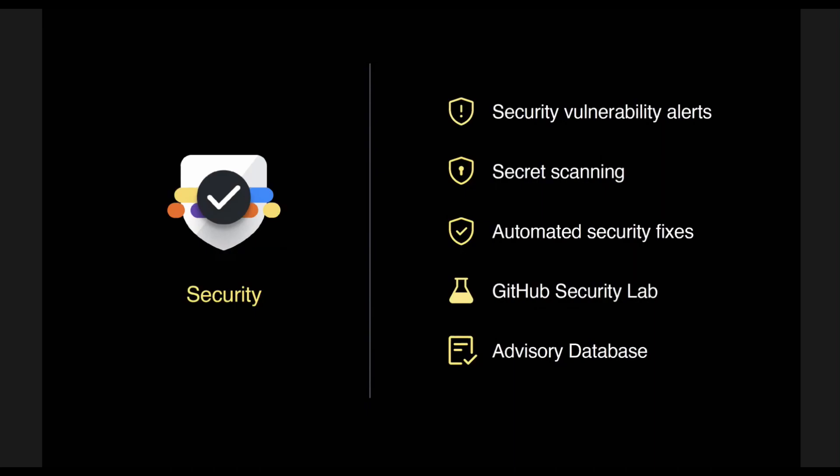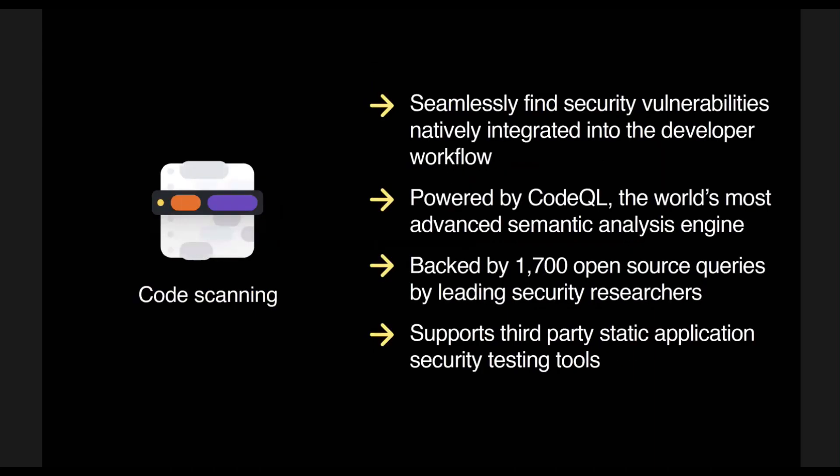So we're securing your dependencies and your secrets — but what about your code? That is where code scanning comes in. It seamlessly finds exploitable vulnerabilities natively integrated into the developer workflow. It is powered by CodeQL, the world's most advanced semantic analysis engine, which comes from our Semmle acquisition. CodeQL is backed by 1,700 open source queries by leading security researchers. You get all of these community actions around Actions, Insights powered by community, and Security powered by community — everything coming together for both open source and enterprise customers.